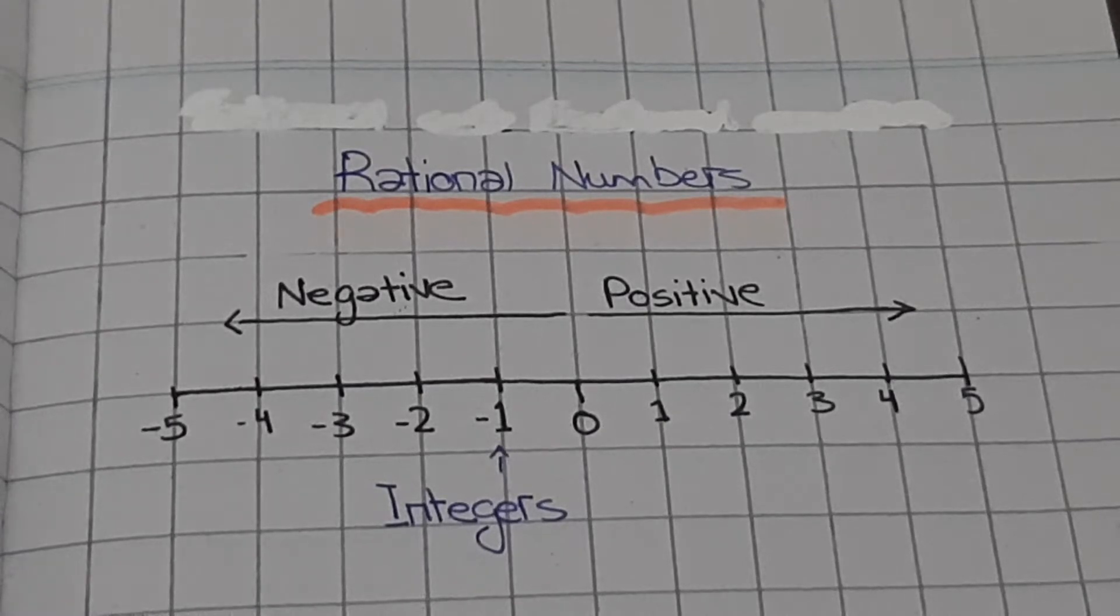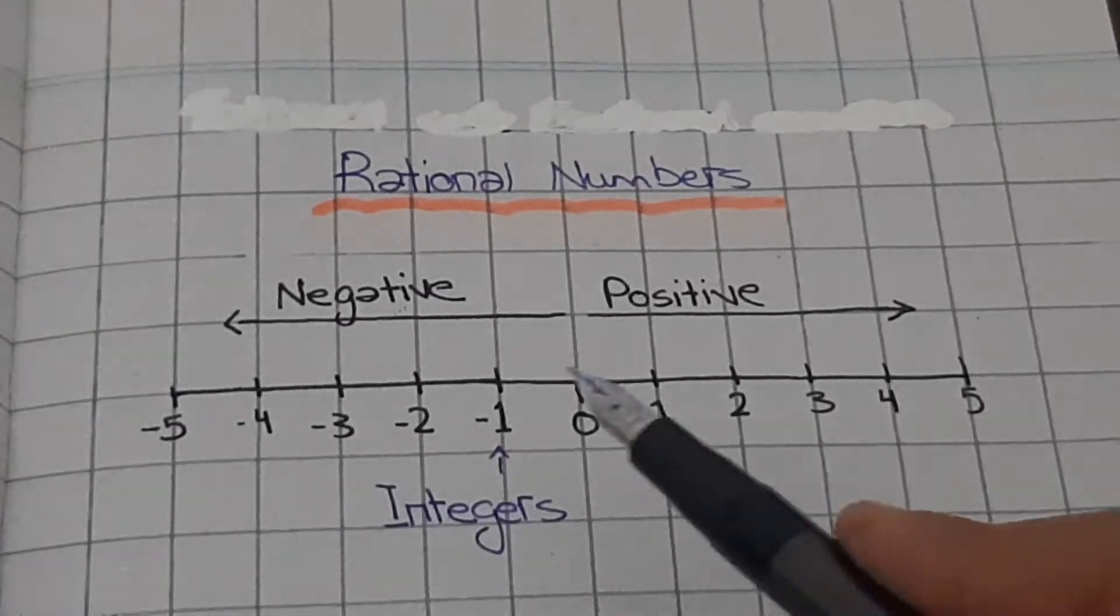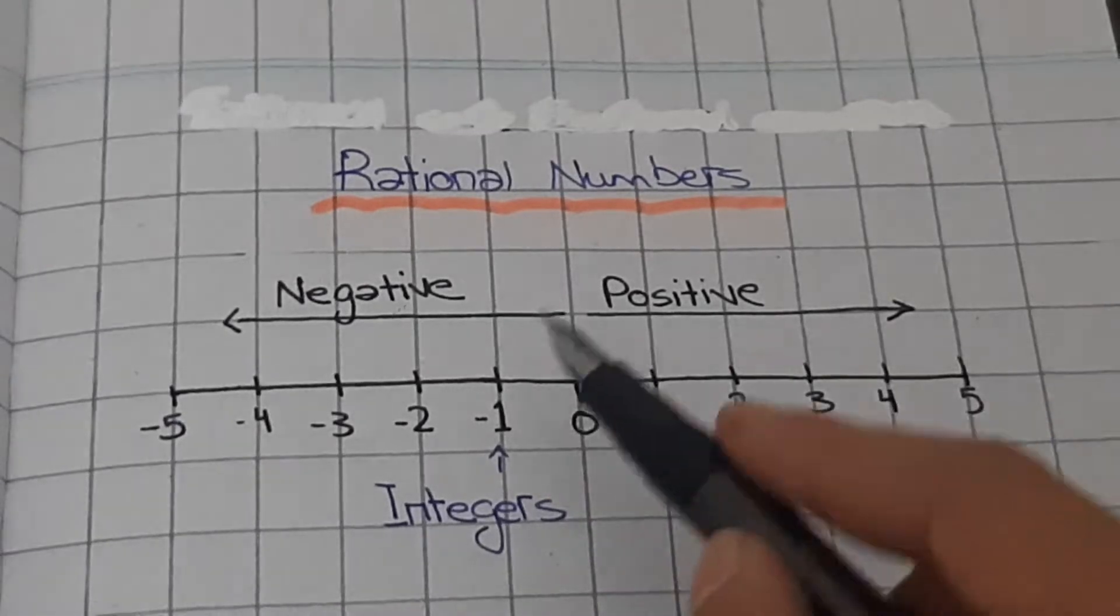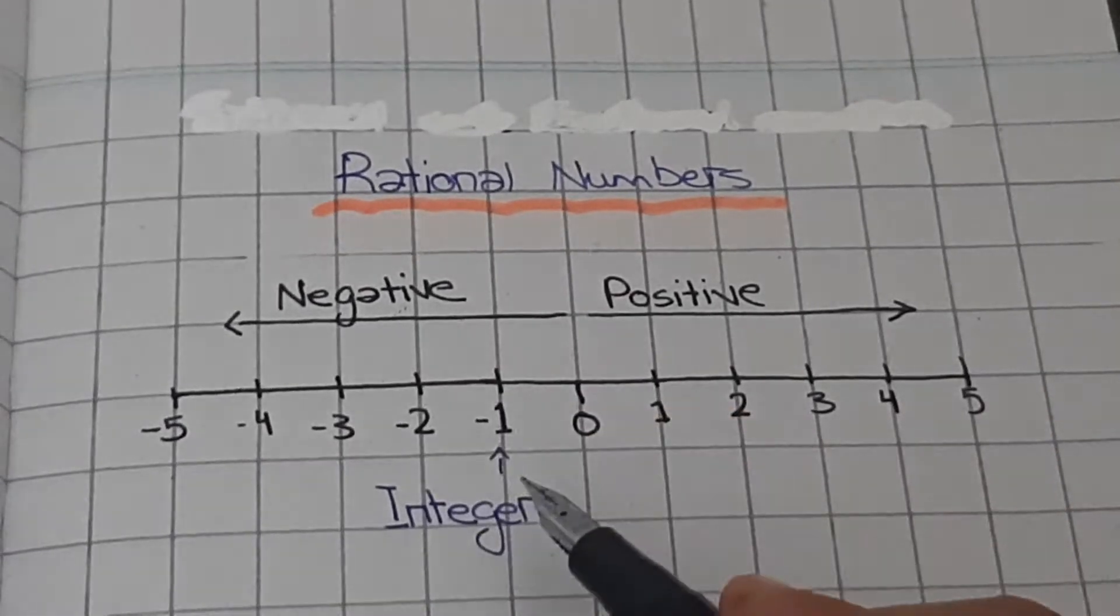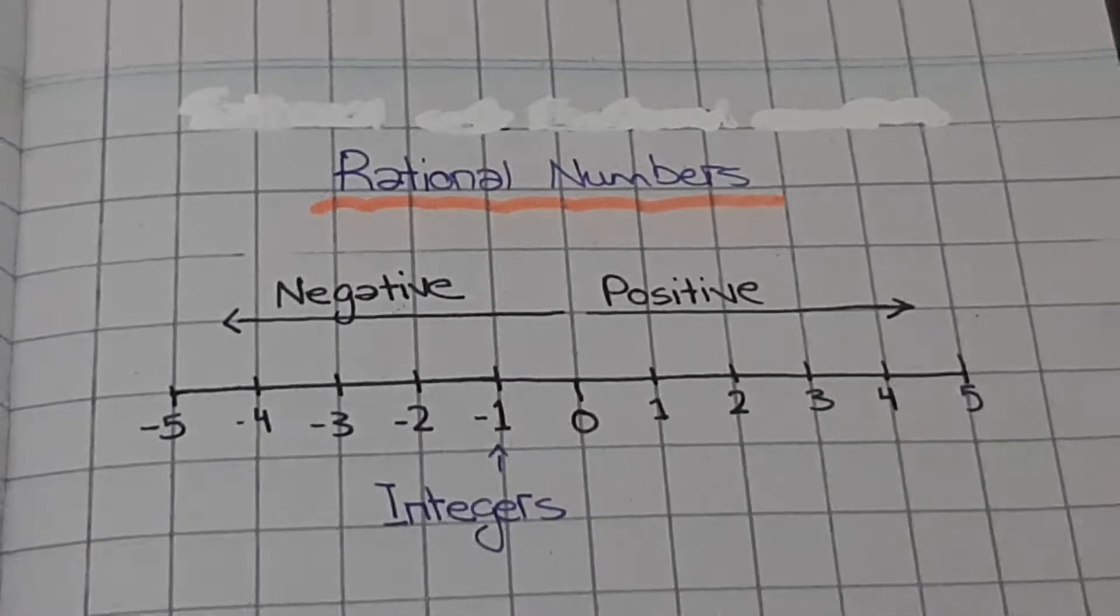So let's start. Most of you will recognize this - this is a number line. The numbers here are known as integers. The numbers on the left side of zero are negative integers and on the right side are positive integers.